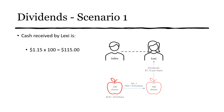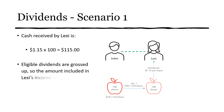But $115 is not necessarily the amount included in income — eligible dividends are grossed up. The amount included in Lexi's income would be $115 × 1.38 = $158.70. Note that 38% is the eligible dividend gross-up as of the time of this recording; I recommend checking the current gross-up rate when you watch this video.